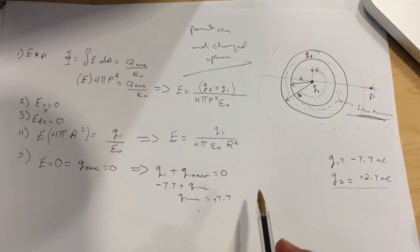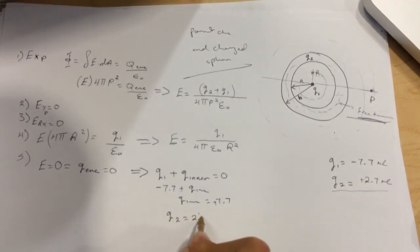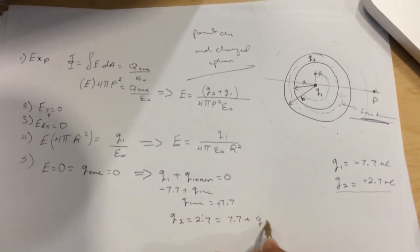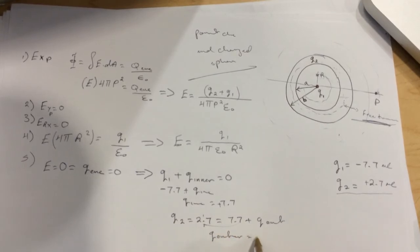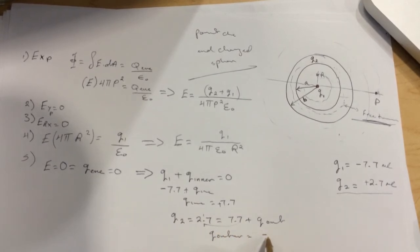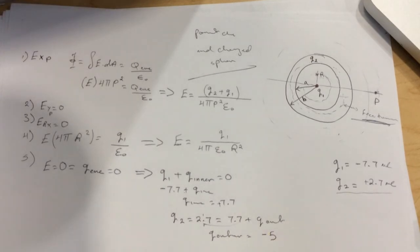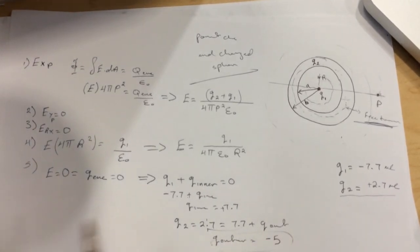Since we have the total charge of Q2 equal 2.7, this will be equal to 7.7 plus Q outer. If we take this to the other side, then Q outer will be equal to negative 5. This is the Q outer.